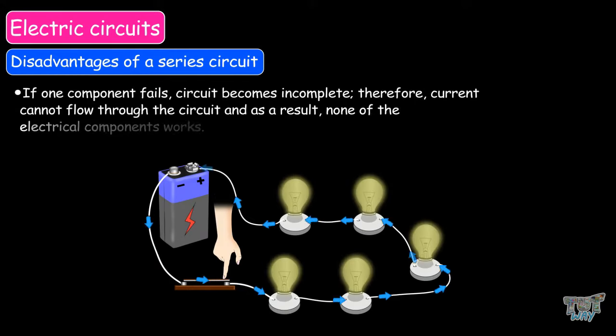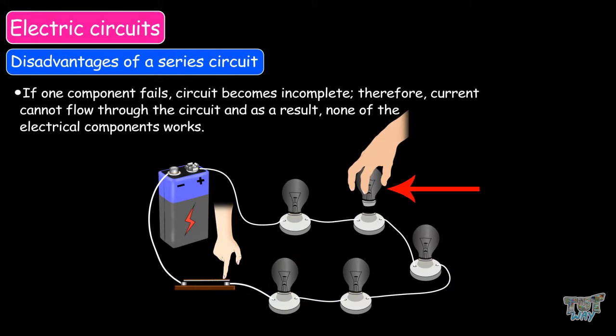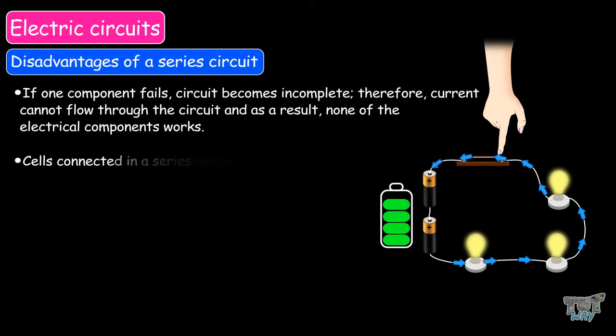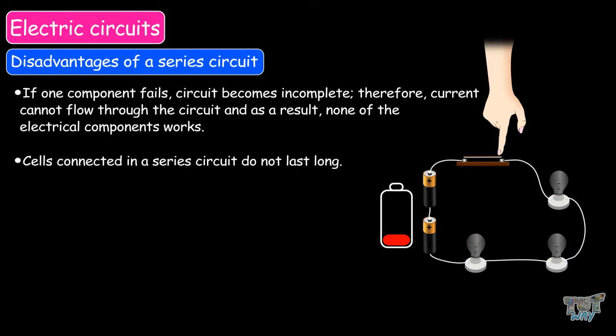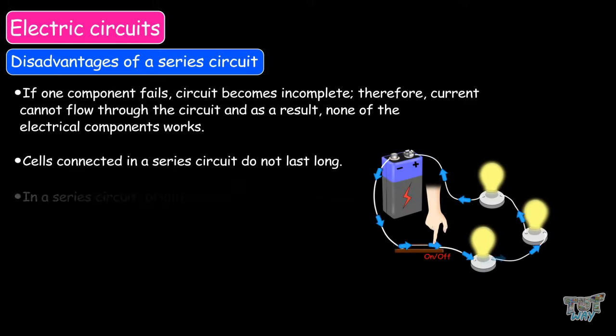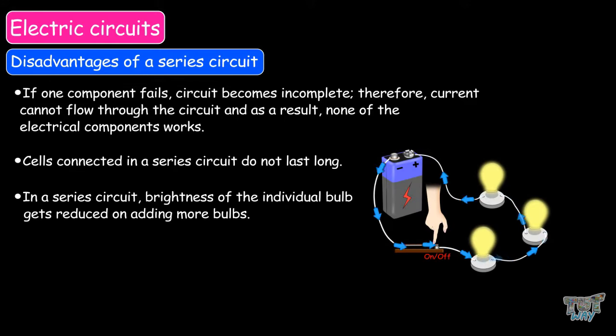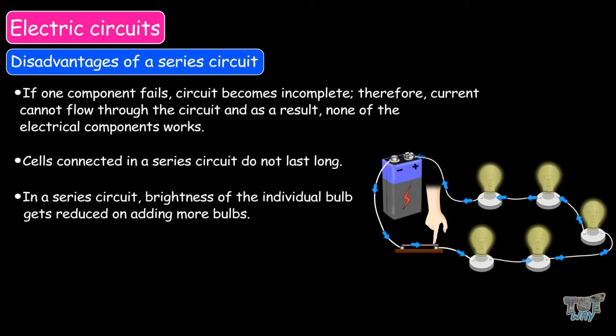Now let us learn about the disadvantages. If one component fails, the circuit becomes incomplete; therefore, the current cannot flow through the circuit, and as a result, none of the components work. Cells connected in a series circuit do not last long. In a series circuit, the brightness of the individual bulb gets reduced upon adding more bulbs.